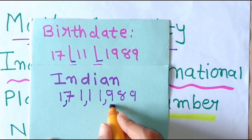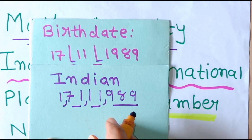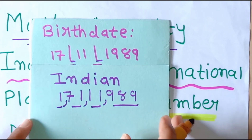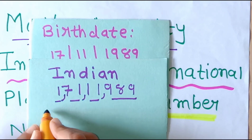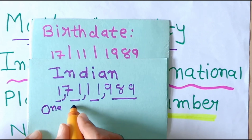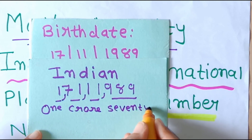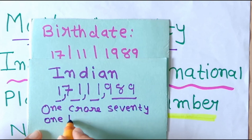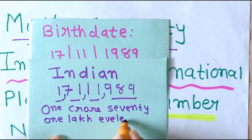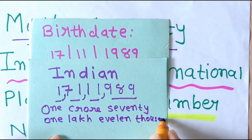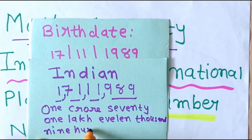This portion is of 100, this part is of 1000, this part is of Lakh, and this one is Crore. So how to write the number name as per the Indian place value system? We write: 1 Crore, 71 Lakh, 11 Thousand, 989.